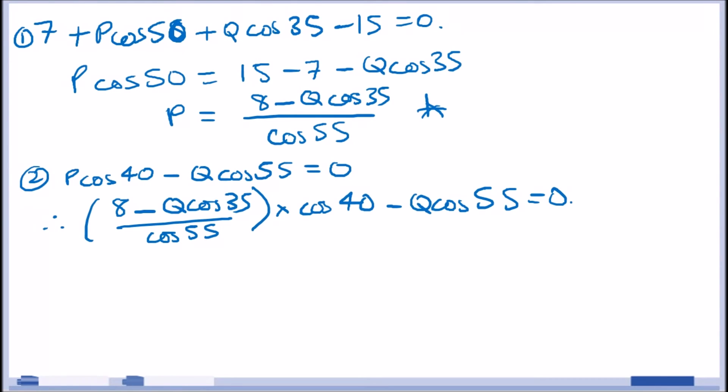Get out of the calculator. We're going to have 8 over cos 55 times cos 40. This should give us something quite big. Hold on. Okay. This should give us 10.7. Yep. So, 10.7.